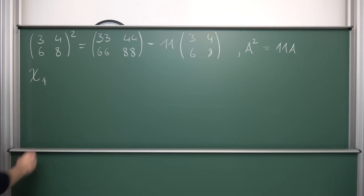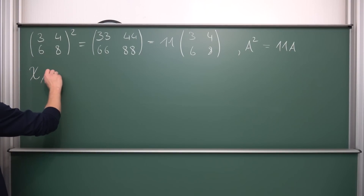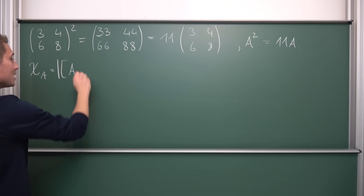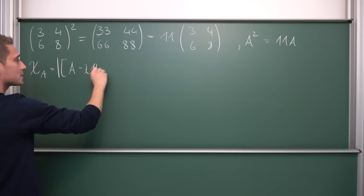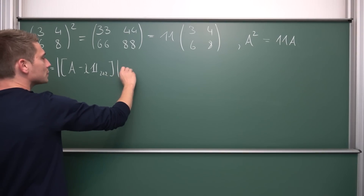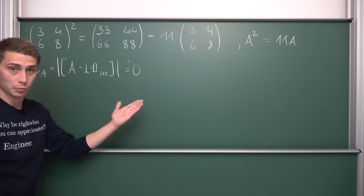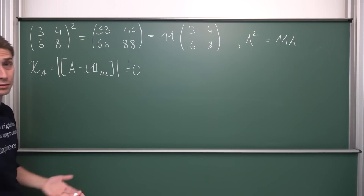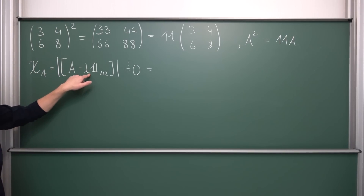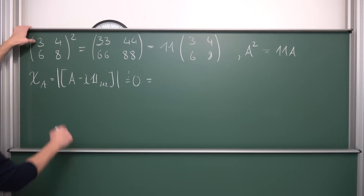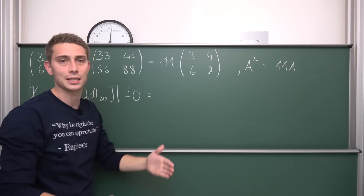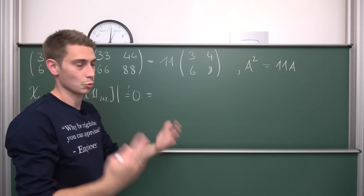Let us take a look at the characteristic polynomial of A first. The characteristic polynomial is just the determinant of A minus the eigenvalues times the identity matrix in the certain dimensions — so the 2×2 identity matrix — and all of this must be equal to 0. This is the characteristic polynomial and we want to solve for the eigenvalues. If we write this out, A minus lambda times the identity matrix is just: 3 minus lambda, 4, 6, 8 minus lambda.